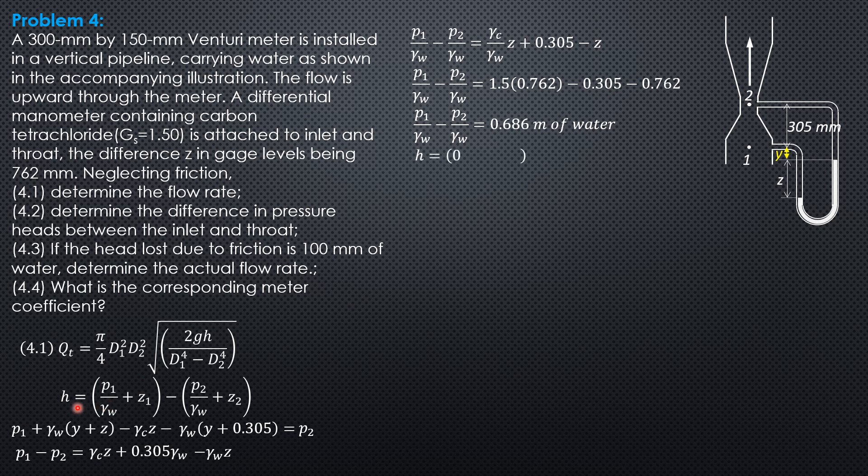Then we now evaluate H. So P1 over gamma of water minus P2 over gamma of water is 0.686. Z1 is 0 then minus Z2 and Z2 is 0.305 as shown in the figure. So H is 0.381 meter of water.